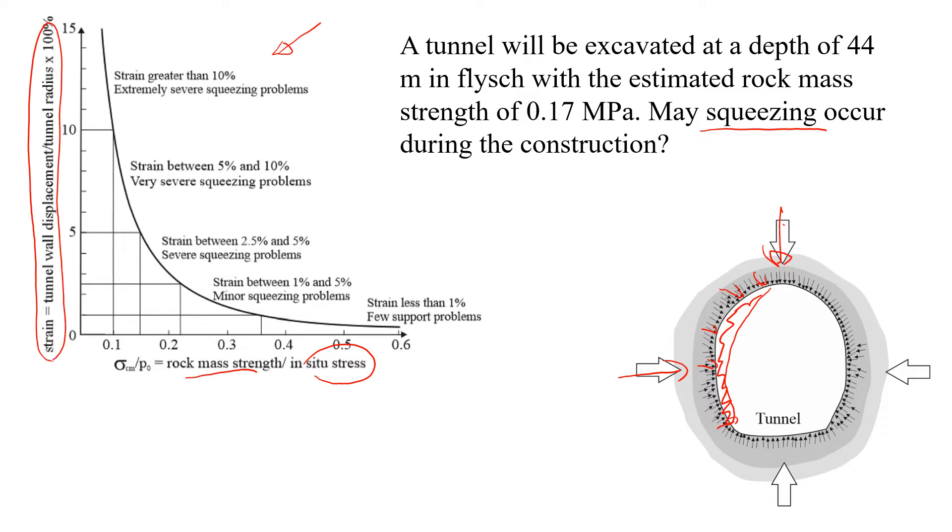Let's look at this example when we have a tunnel that will be excavated at a depth of 44 m in flysch. The flysch is bearing planes. The estimated rock mass of this material is pretty low, probably very jointed and soft rock mass. We're going to estimate if there is going to be squeezing or not if we excavated at this depth, which is 44 m.